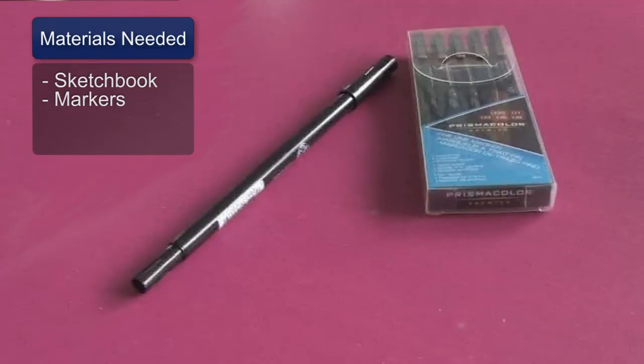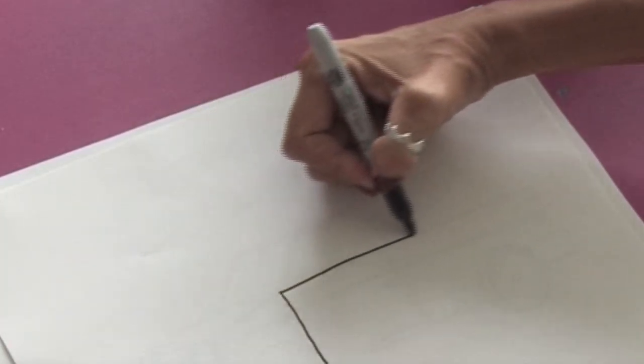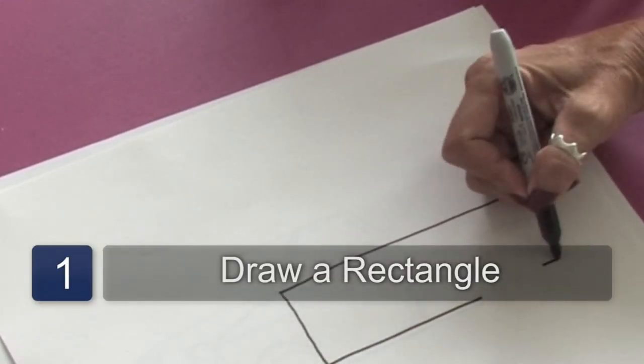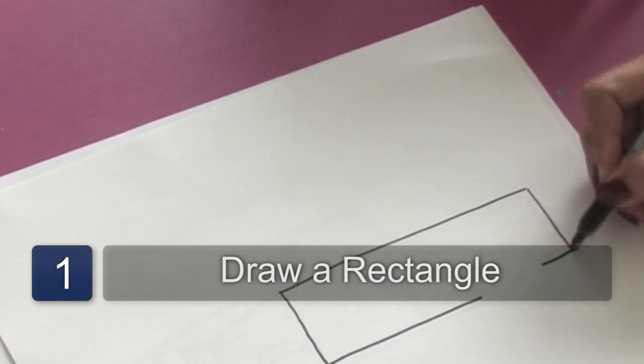You'll need a sketchbook and some black markers to draw with. So we're going to start off with a rectangle, although I'm going to leave a space so that we can draw in the wheels.